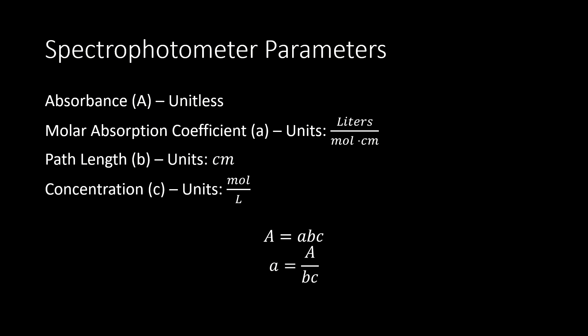Getting into the spectrophotometer parameters specifically, there are four main ones related in the following way. Absorbance, which is unitless, equals the product of the molar absorption coefficient, the path length, and the concentration — A = abc. The molar absorption coefficient, sometimes called the molar extinction coefficient, depends on the type of ion we're looking at. Little a is the molar absorption coefficient, little b is the path length, little c is the concentration, and capital A is absorbance — what we directly see on the spectrophotometer.